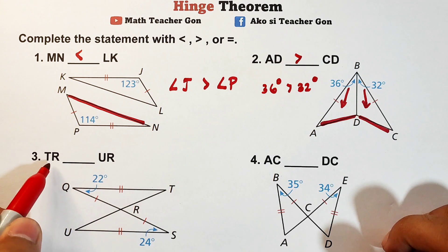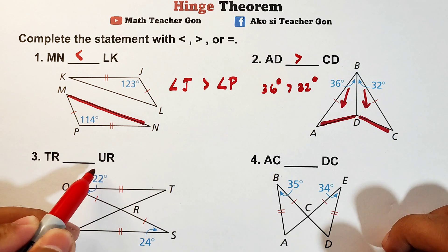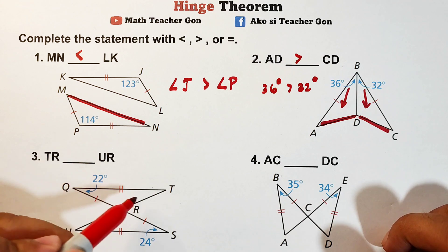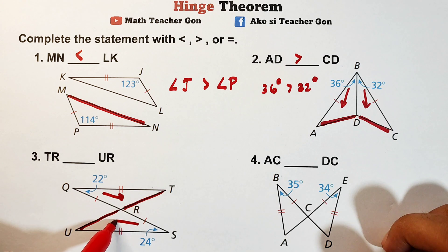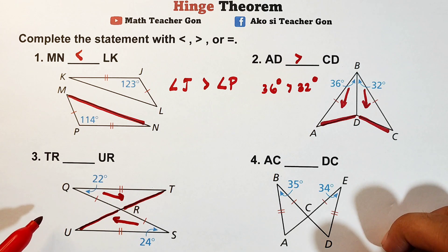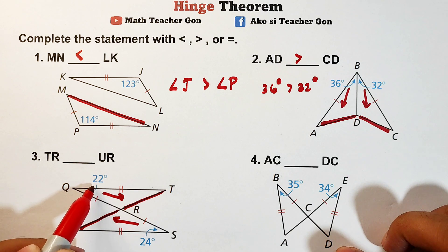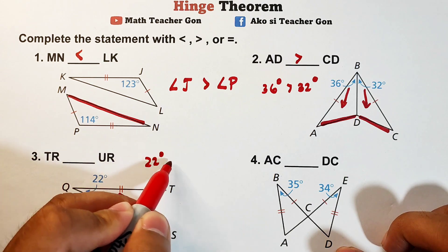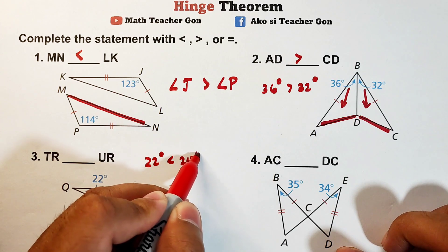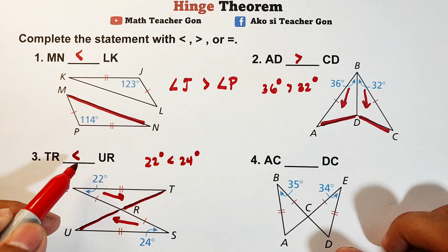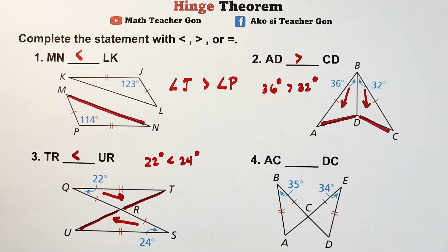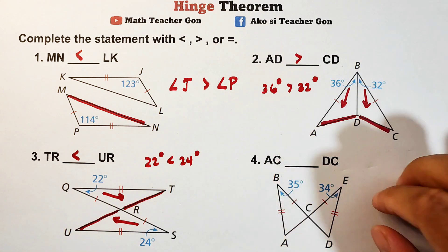For item number three, we have TR blank UR. Side TR is opposite to the 22-degree angle, and side UR is opposite to the 24-degree angle. Since 22 degrees is less than 24 degrees, the appropriate symbol is less than: TR is less than UR.